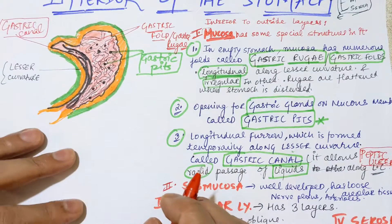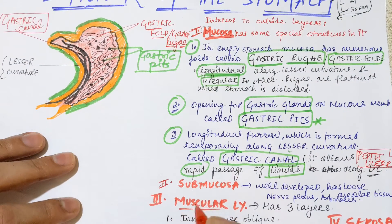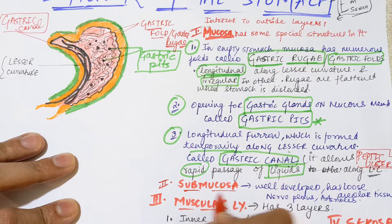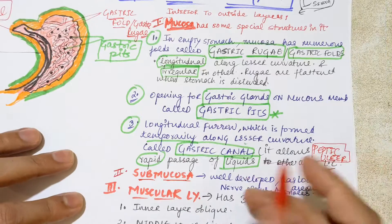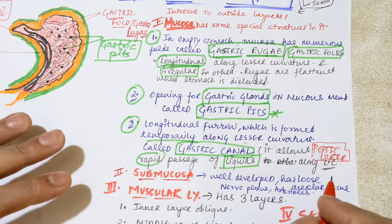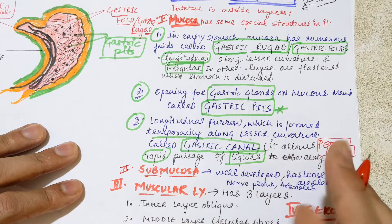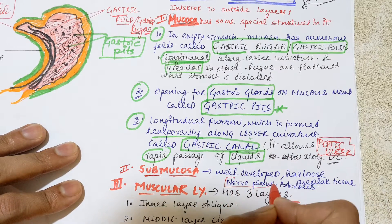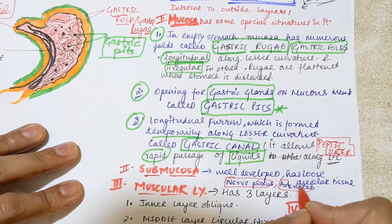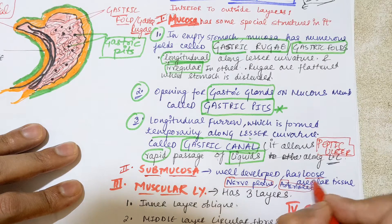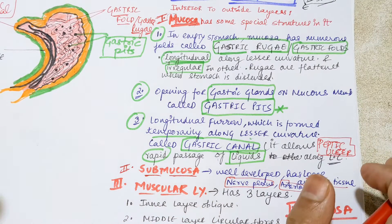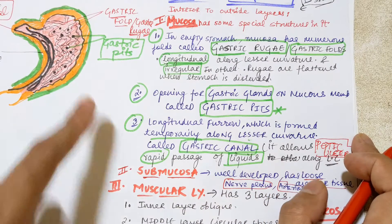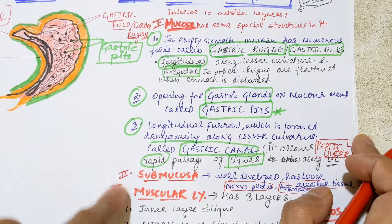Now comes the second layer — submucosa. It is well developed but does not have many special features. It contains nerve plexus, arterioles, and loose connective tissue.